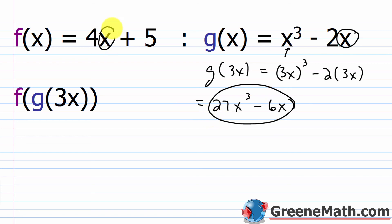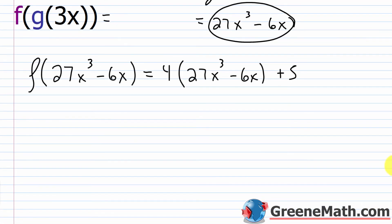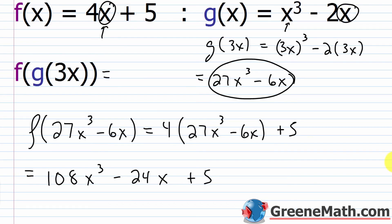Now I want to plug 27x cubed minus 6x in for x in f of x. So f of 27x cubed minus 6x equals 4 multiplied by the quantity 27x cubed minus 6x, then plus 5. So 4 times 27 is 108 times x cubed, then minus 4 times 6 which is 24 times x, then plus 5. So f of g of 3x equals 108x cubed minus 24x plus 5.